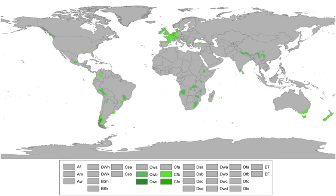Oceanic climates in Europe occur mostly in northwest Europe, from Ireland and Great Britain eastward to central Europe. Most of France away from the Mediterranean, Belgium, the Netherlands, Denmark, Germany, Norway, the north coast of Spain north of Navarre, Galicia, Asturias and Cantabria, the western Azores off the coast of Portugal, the south of Kosovo and southern portions of Sweden also have oceanic climates.